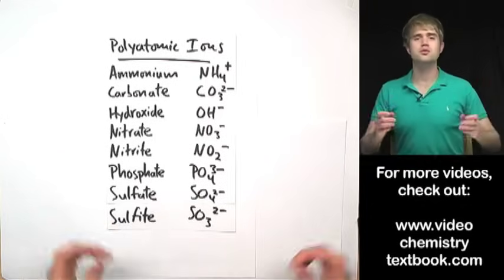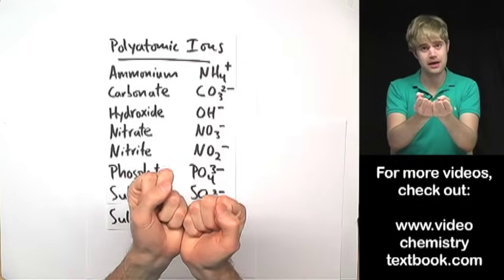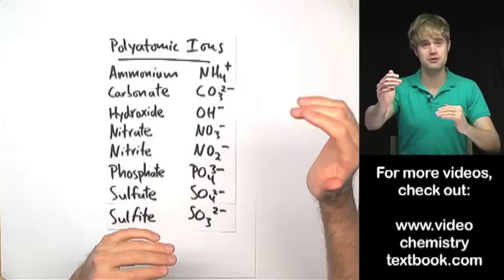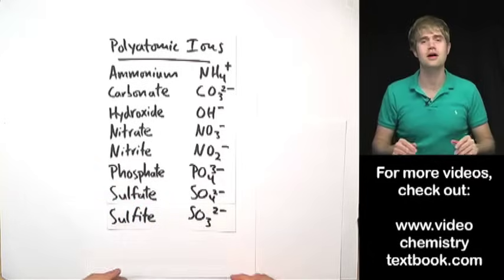So anyway, that's what polyatomic ions are. They are groups of atoms that come together and have either more electrons than protons or more protons than electrons and because of that this whole group of atoms together has a charge.